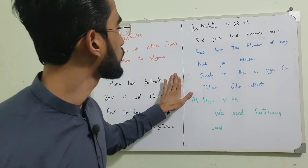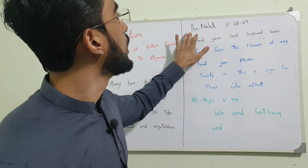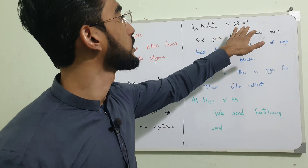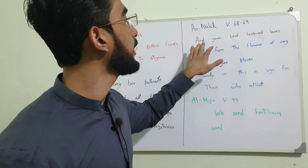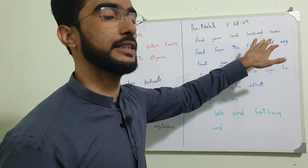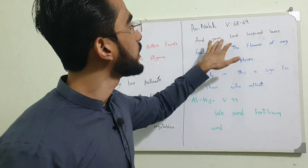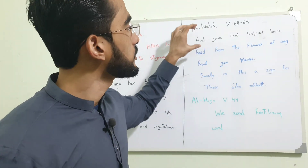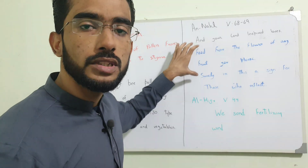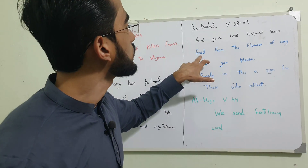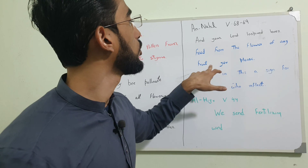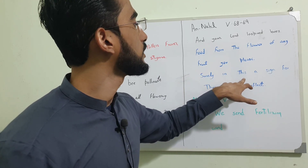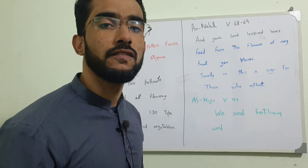Let's see about the Quran verse. Allah says in the Quran, Surah Al-Nahal, verse number 68 to 69: 'And your Lord inspired bees.' This verse continues — I kept it short for understanding. The next verse says: 'Feed from the flowers of any fruit you please. Surely in this is a sign for those who reflect.'